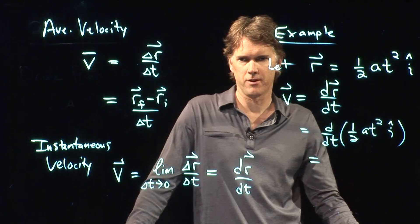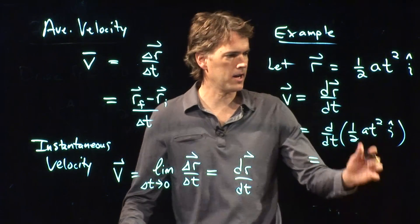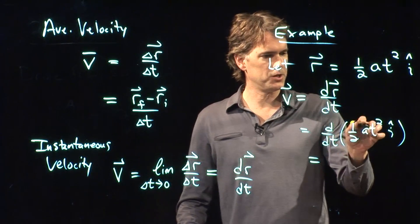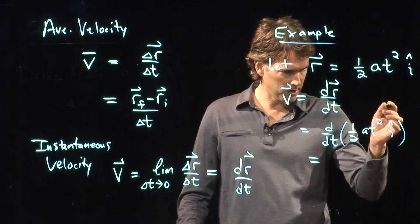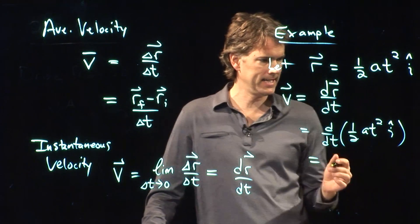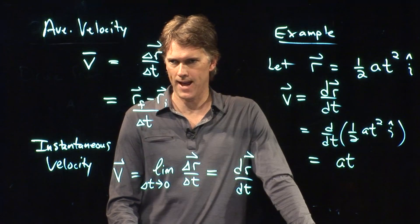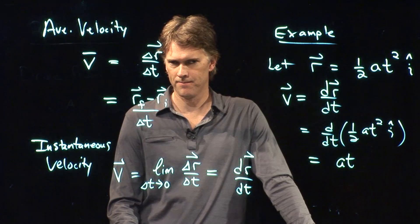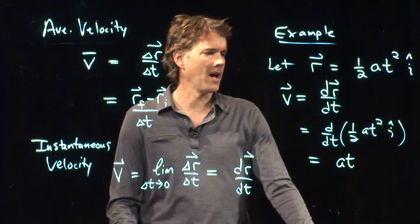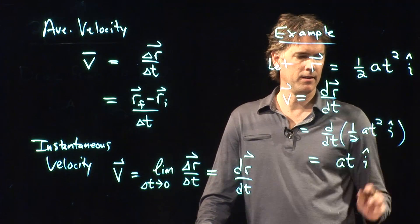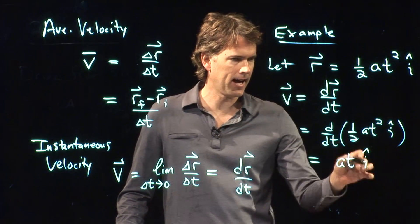What is the derivative of one-half AT squared? Somebody raise your hand. Yeah? AT. AT, right? I pull down the exponent, that two cancels with the half, I go AT to the two minus one, which is just AT, and so I just get that. We done? Is that right, or do I have to add something else there? Yeah, exactly. We've got to hang on to that I hat.